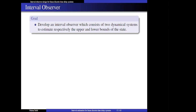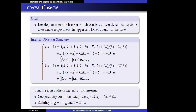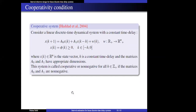The aim is to develop an interval observer consisting of two dynamical systems to estimate respectively the upper and lower bounds of the state. The state estimation is achieved by an interval observer where lower and upper x are the lower and upper bounds of the estimate, and L0 and L1 are the observer gain matrices to be computed. The problem consists in finding two gain matrices L0 and L1 to ensure two essential conditions. The first condition is relative to the cooperativity property — that means x remains between the bounds — and the second is stability of the lower and upper estimation error.